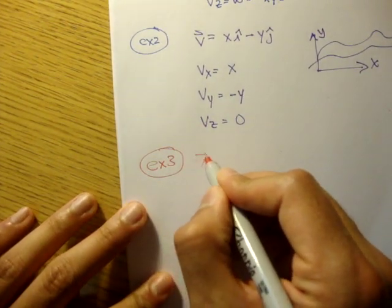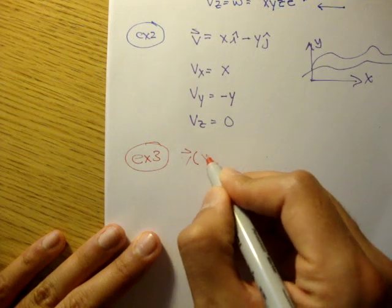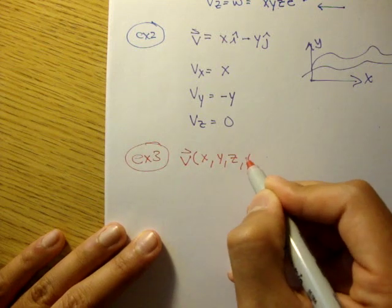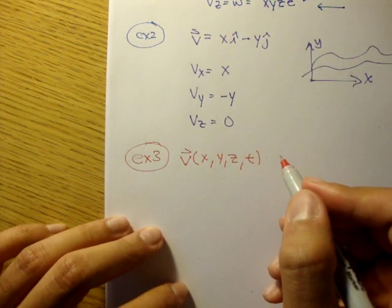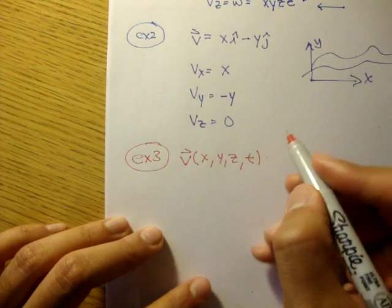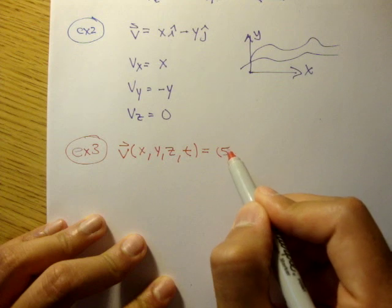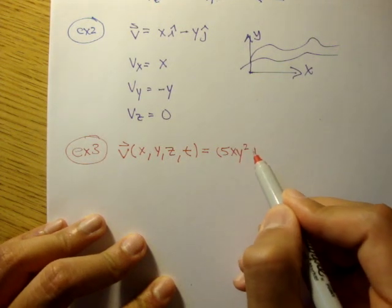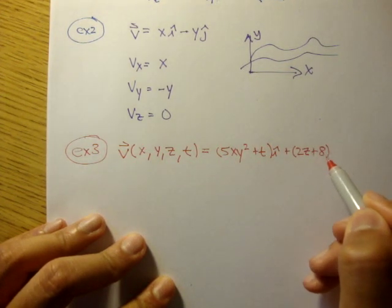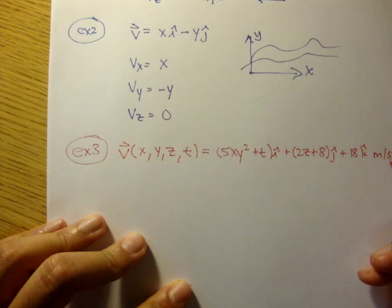Here, the velocity field, which is dependent on x, y, z, and t, so we're in an unsteady flow because there is a time variable t. And that's given to us as 5xy squared plus t, i plus 2z plus 8j plus 18k. I think that's at meters per second.